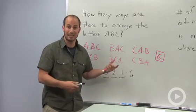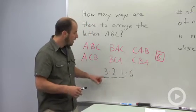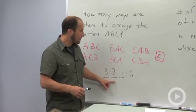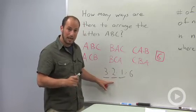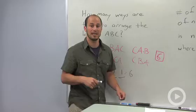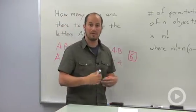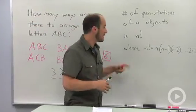This is called a factorial. Basically what we're dealing with is the number of permutations, the number of different ways of writing the same set of objects, is just n factorial, where factorial is taking the number you're dealing with and multiplying it by every number less than that.